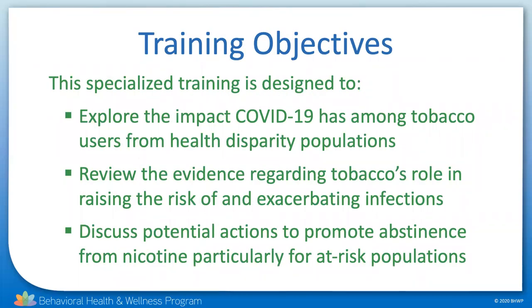Our goal today is three-fold. We want to explore the disproportionate impact COVID-19 and infectious diseases have among tobacco users from health disparity populations. Review the scientific evidence base regarding tobacco's role in suppressing the immune system, damaging the lungs, and causing the underlying medical conditions that are associated with worse COVID-19 outcomes. And we want to discuss potential actions to promote education and abstinence from tobacco, particularly for at-risk populations.